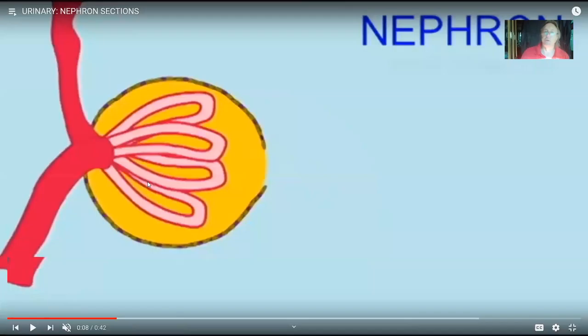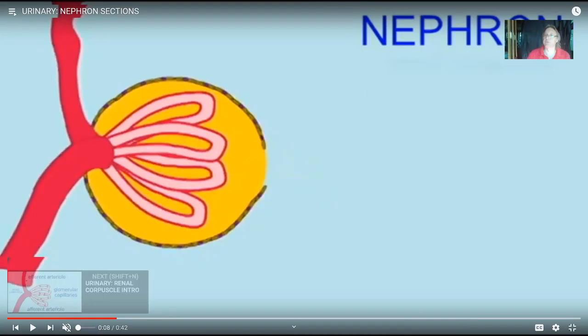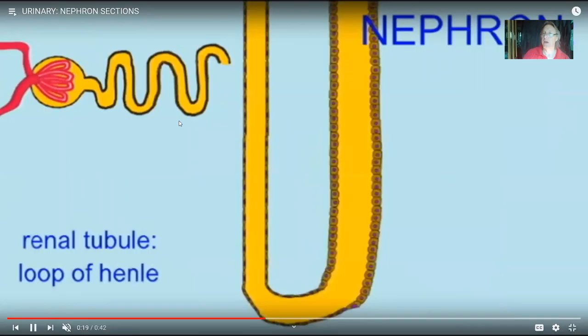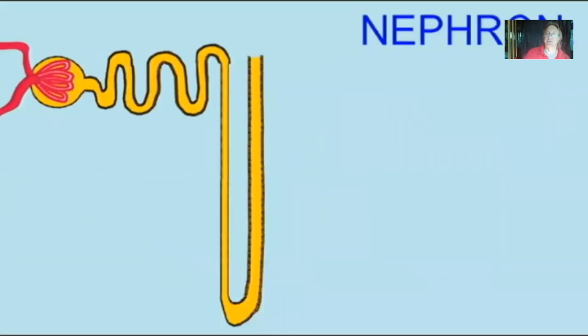Nephrons have two parts: the renal corpuscle, which is essentially capillaries in a bag — this is where blood is filtered so that urea can come out. Blood comes in through an afferent arteriole, passes through the glomerular capillaries, and leaves through an efferent arteriole, but while here the urea comes out. The remaining portion is a renal tubule, where reabsorption of good stuff occurs so it's not excreted, and where additional waste is secreted.